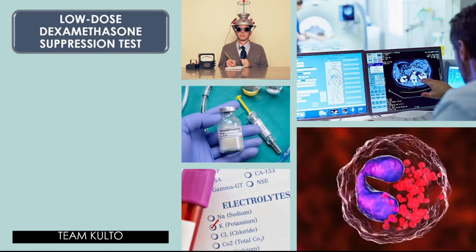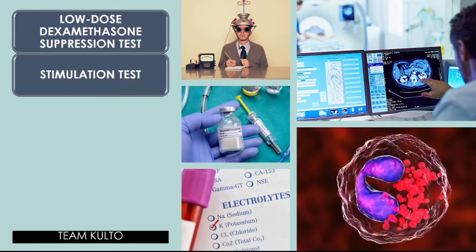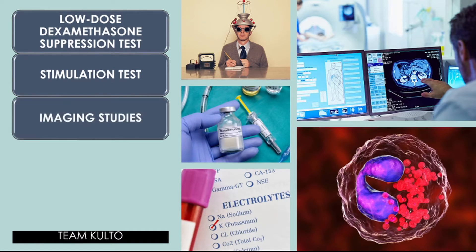Another test is the stimulation test: administration of metyrapone, which blocks cortisol production by the adrenal glands, tests the ability of the pituitary gland and hypothalamus to detect low plasma cortisol levels by increasing corticotropin production. Imaging studies — ultrasound, CT scan, and angiography — localize adrenal tumors and may identify pituitary tumors. Remember, one of the causes of Cushing's syndrome is benign tumors of the adrenal gland, so imaging is needed to rule that out.